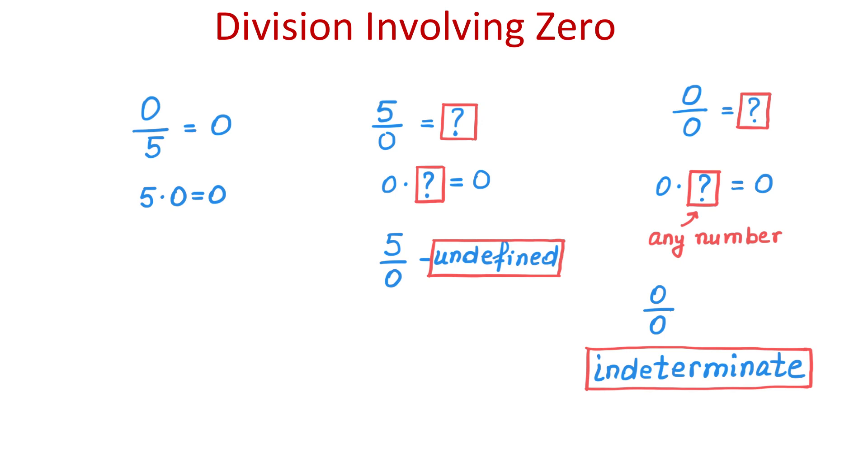Now let's review again all these three cases. 0 divided by a nonzero number is 0. A nonzero number divided by 0 is undefined, and 0 divided by 0 is indeterminate.